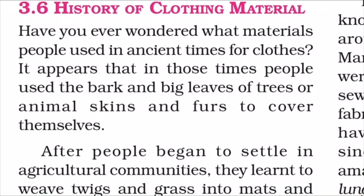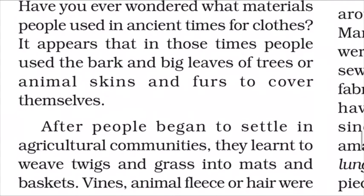History of Clothing Material — Section 3.6: Have you ever wondered what materials people used in ancient times for clothes? It appears that in those times people used the bark and big leaves of trees, or animal skins and furs to cover themselves. After people began to settle in agricultural communities, they learned to weave twigs and grass into mats and baskets. Vines, animal fleece, and hair were twisted together into long strands.